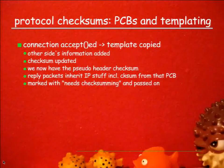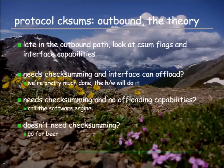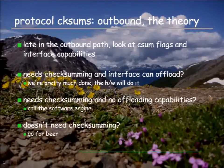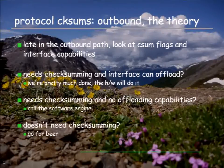Outbound in theory: pretty late in the outbound path, we look at the checksum flags in the packet header and compare to the interface capabilities. There are basically three cases: the packet says it needs checksumming and the interface can do it - fine, move on. The packet needs checksumming and the interface is not capable - we need to do this in software. This used to be somewhere in the middle of the stack; I moved it as far down as possible. So we operate under the model that we always assume checksum offloading, and if not, we emulate the offload engine in software. If the packet doesn't need checksumming, we obviously don't do anything.